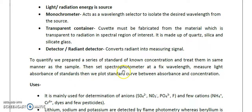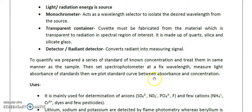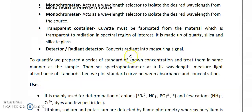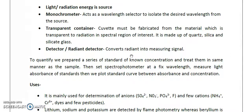We treat the standard solutions in the same manner as the sample. In spectrophotometry, we fix the lambda max and measure the absorbance of standards. We then plot a standard curve of absorbance vs. concentration — we prepare standard solutions, take absorbance at different concentrations, then take the test solution absorbance, drop a perpendicular, and use the relation: absorbance of standard divided by concentration of standard equals absorbance of test divided by concentration of test. In this manner the unknown concentration can be calculated.